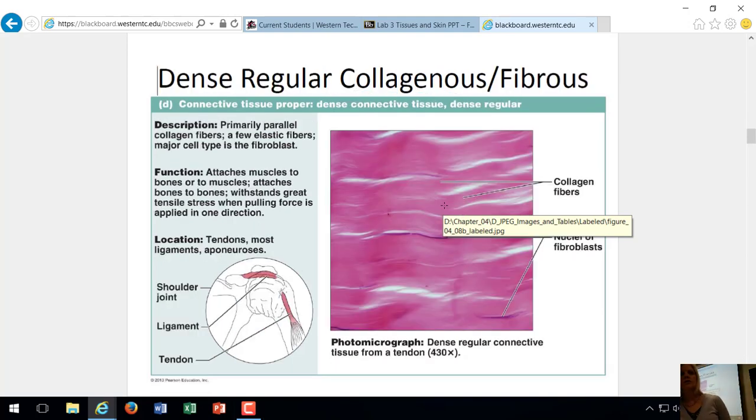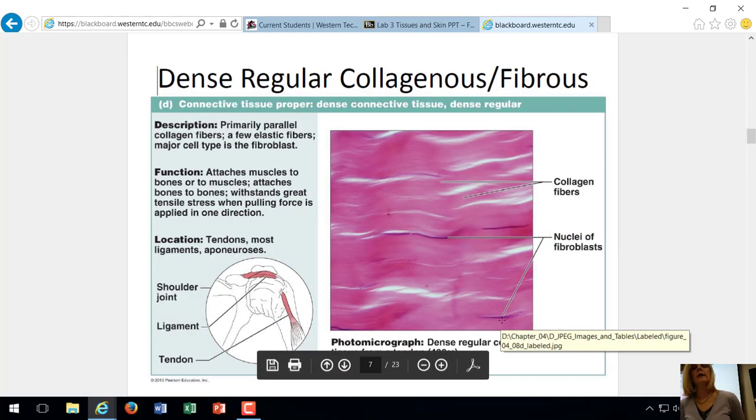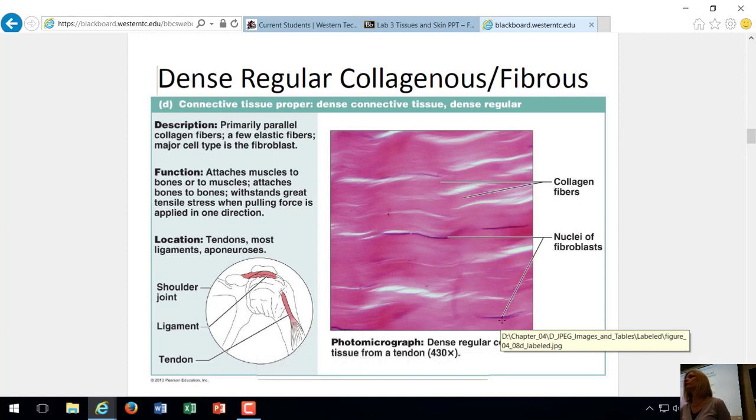Another connective tissue is dense, regular, collagenous. You can call it that, all three of those words, or you can just call it fibrous. If you'd rather just remember it as fibrous connective tissue, that's fine. Connective is the classification again. Where we find this is ligaments and tendons. So it attaches muscle to bone and bone to bone. Tendons attach muscle to bone, ligaments attach bone to bone.